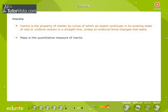Inertia is the property of matter by virtue of which an object continues in its existing state of rest or uniform motion in a straight line, unless an external force changes that state. Mass is the quantitative measure of inertia.